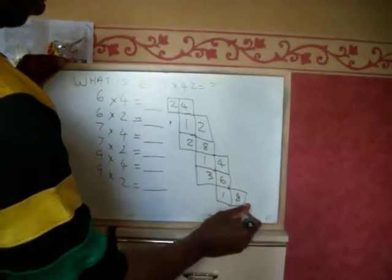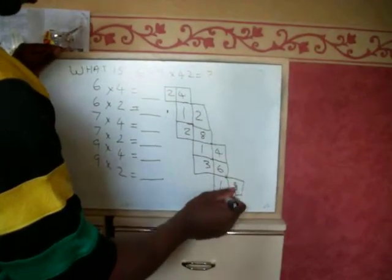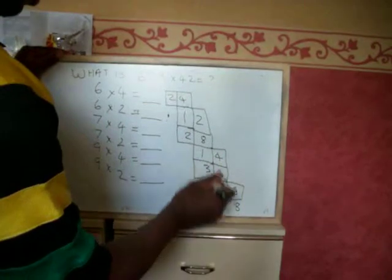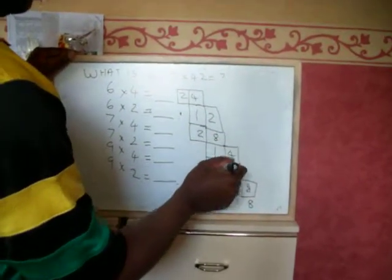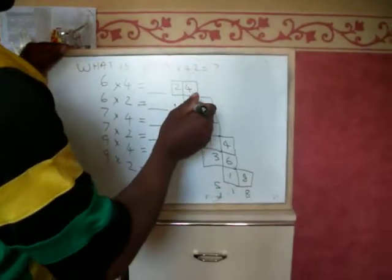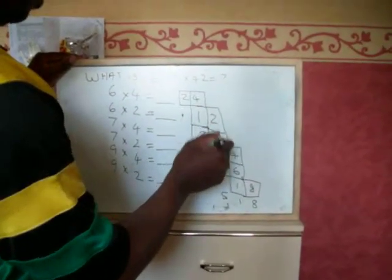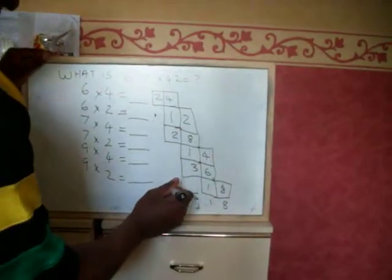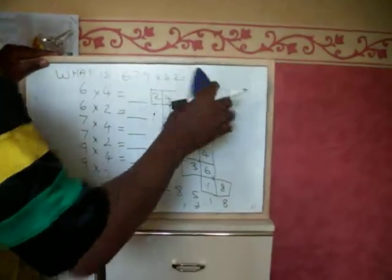Add it up: 8, 4 add 6 add 1 is 11, 2 add 1 is 10, add the 1, 1 add 3 is 14, 15, 4 add 1 is 5 add 2, 7 add 1 is 8, 2 add nothing is 2. There you go, the answer is equal to...